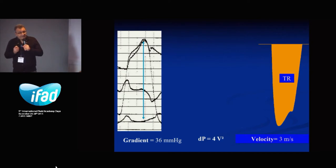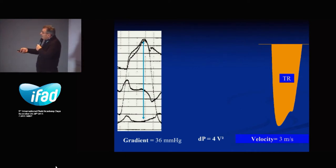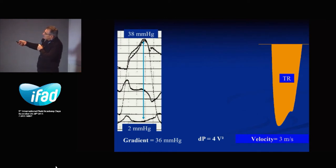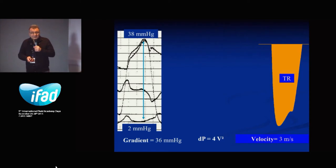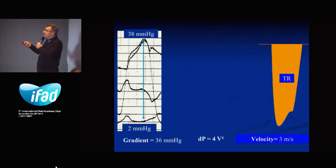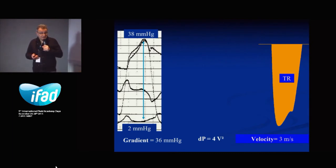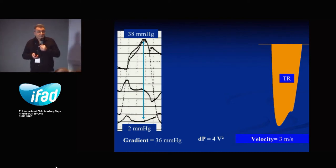If you are working in the ICU, you have the right atrial pressure — the CVP. You add the CVP to the pressure gradient of 36 mmHg, and what you assess is the systolic pressure in the right ventricle. Because there is no pressure gradient between the right ventricle and the pulmonary artery, you can assess the systolic pressure in the pulmonary artery simply by measuring the maximum velocity of the tricuspid regurgitation. And we all have a small, physiological tricuspid regurgitation.